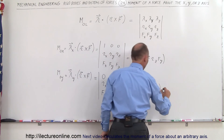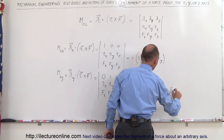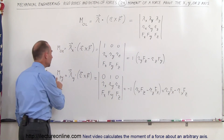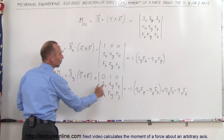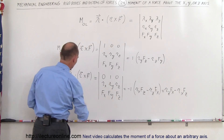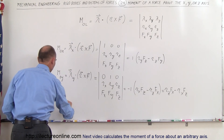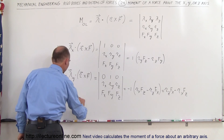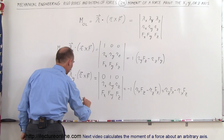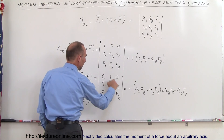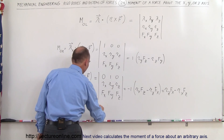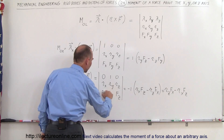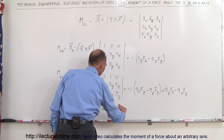Applying that minus sign gives us R sub Z times F sub X minus R sub X times F sub Z. In the same way we can find the moment about the Z axis — there we have a 1 in the Z position — so the moment about the Z axis will be equal to the component only along the Z direction, multiplied via a scalar product times R cross F. That gives us 1 times (R sub X times F sub Y minus R sub Y times F sub X).